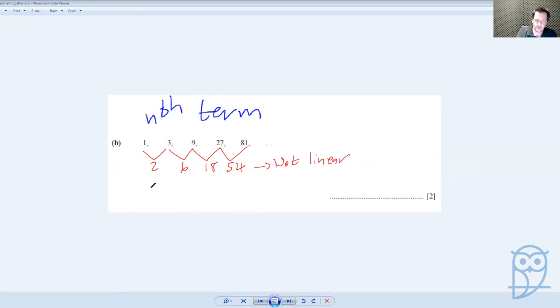As I introduced you to last time, as some foreshadowing, we check a second difference. That would be 4, that would be 12, and that would be 36. And because that's not constant, it is not quadratic. Therefore, it must be geometric or exponential.